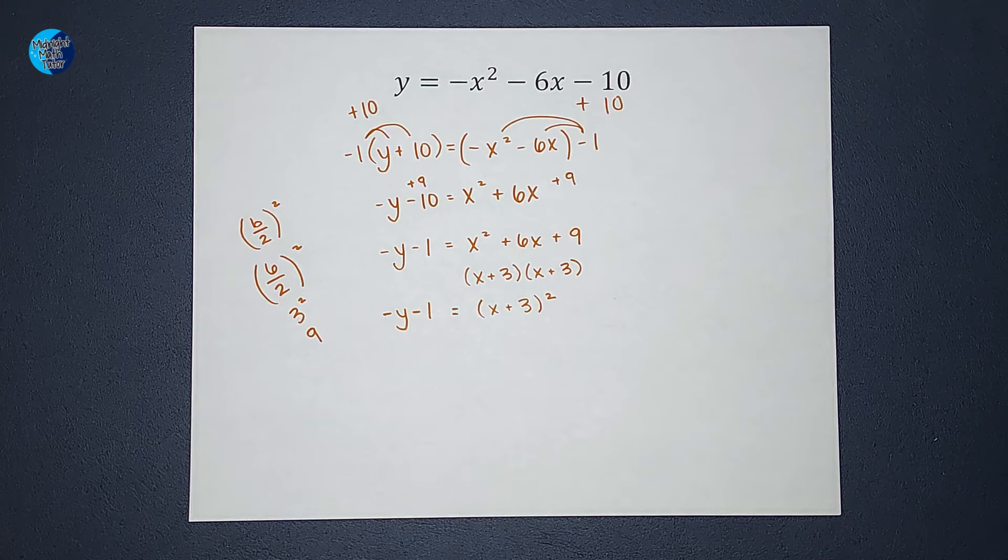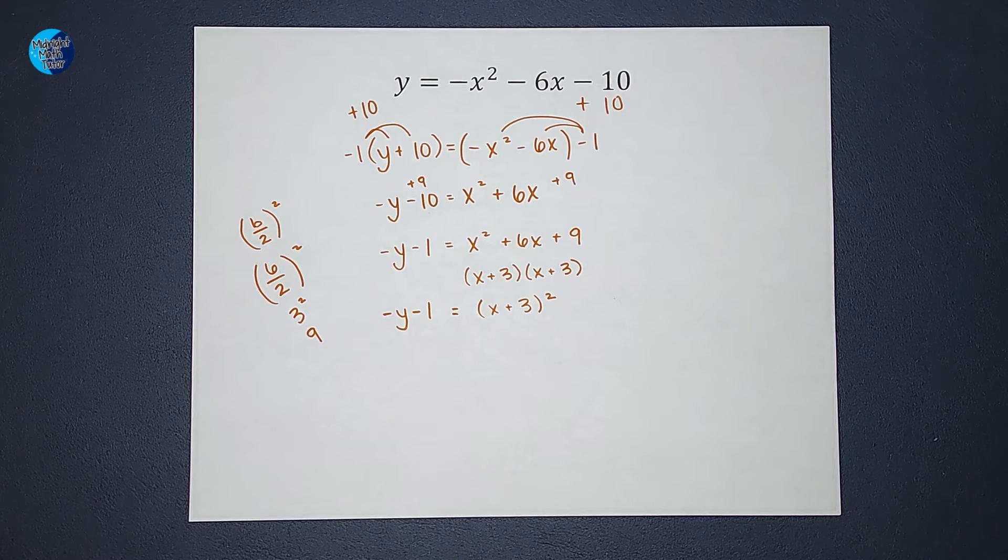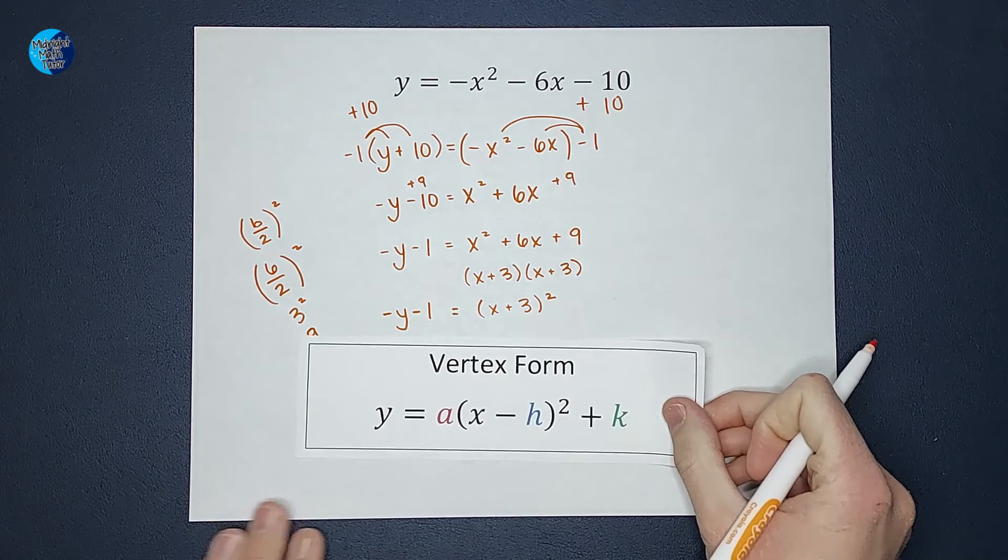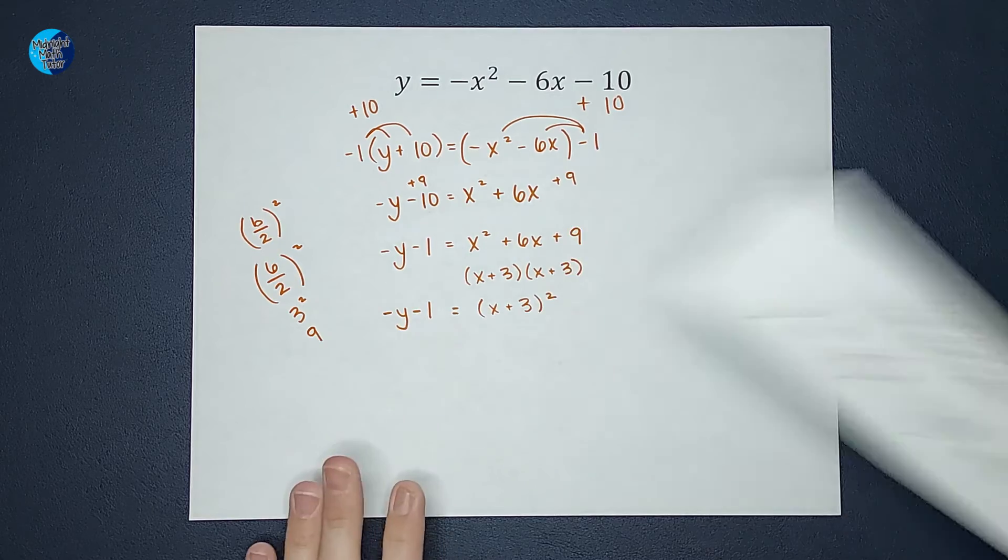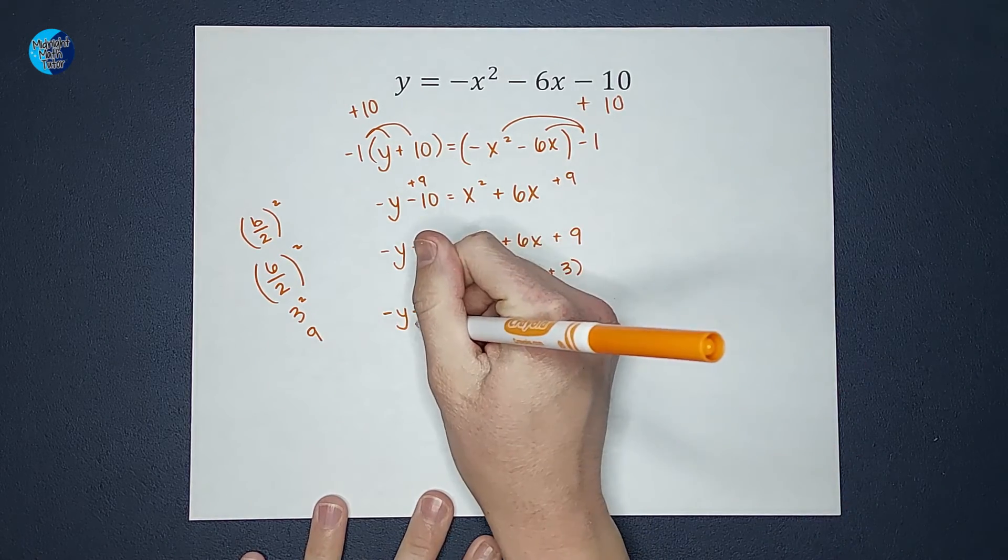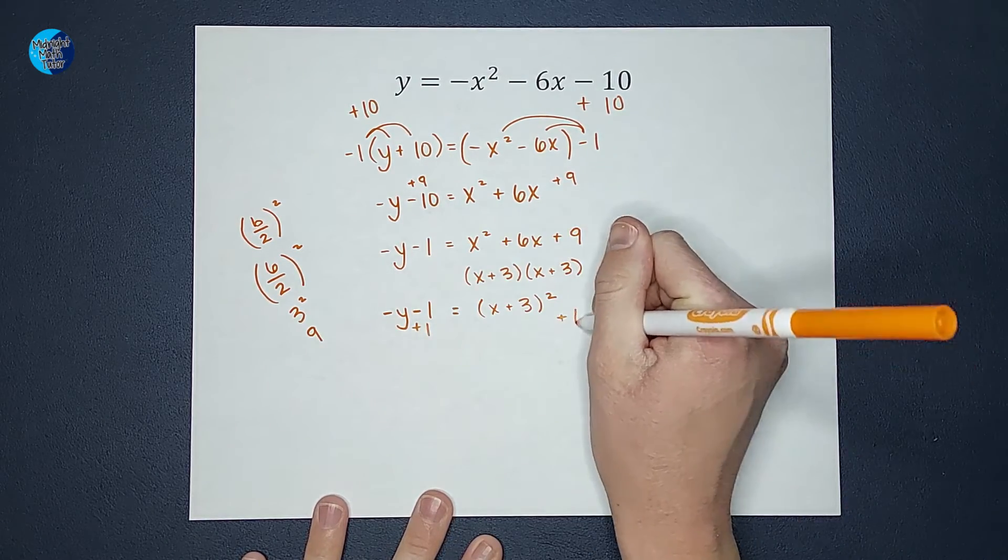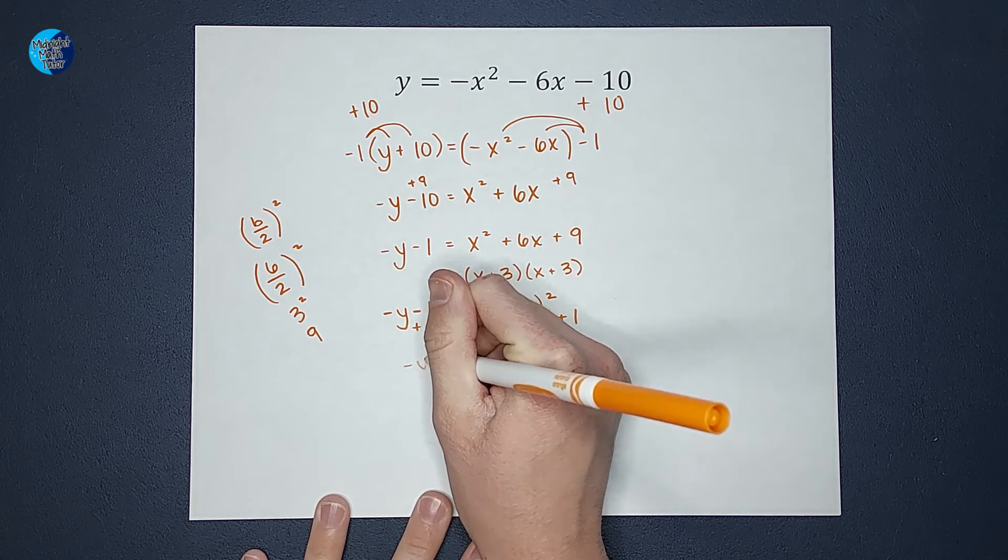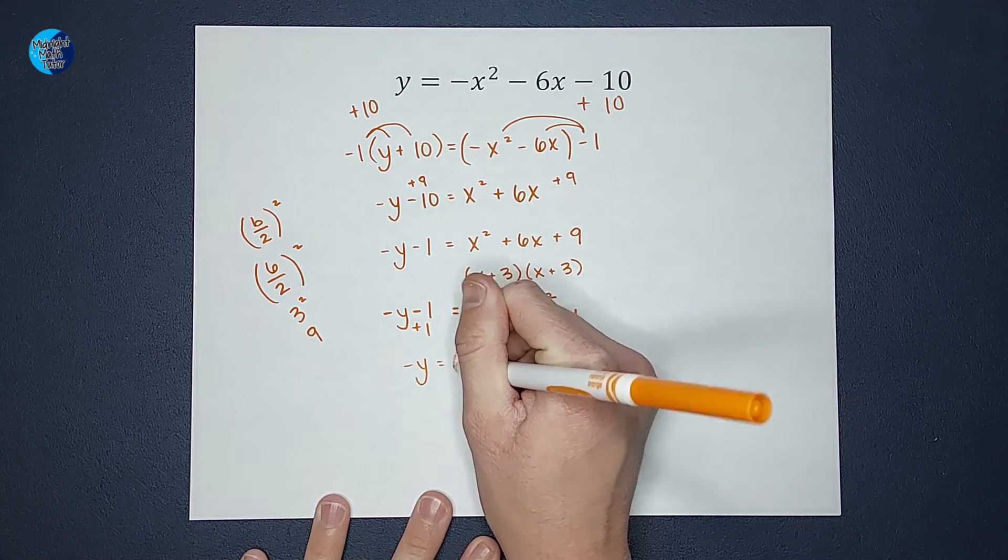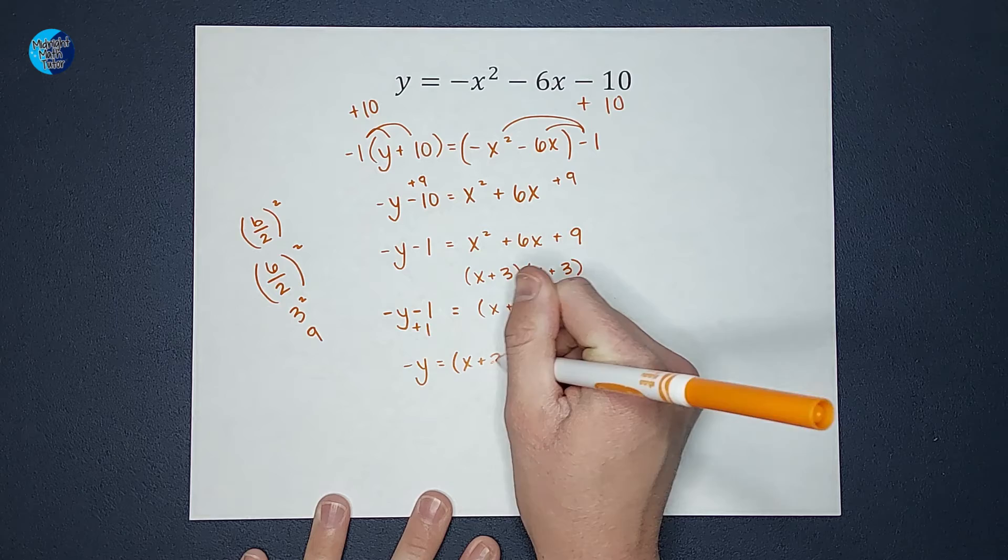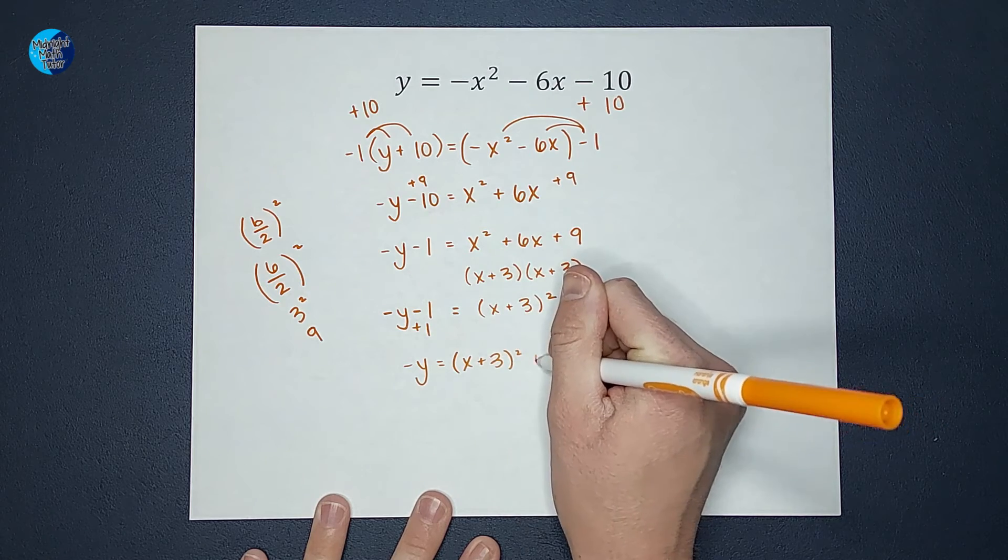The next thing I'm going to do is now I want y alone. When I'm in vertex form, my y is all by itself. So first I'm going to add this 1 to both sides, and I get negative y equals x plus 3 squared plus 1.